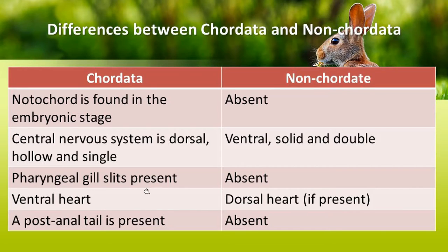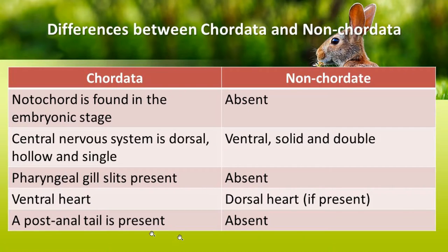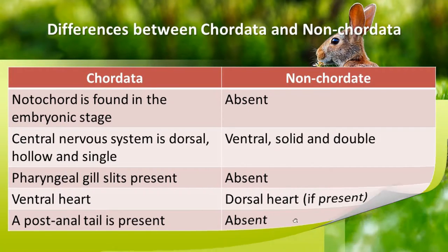Chordates possess pharyngeal gill slits, which are absent in non-chordates. In Chordata, the heart is ventrally placed; in Non-chordata, the heart is dorsally placed if present. Chordates will have a post-anal tail, whereas it is absent in non-chordates.